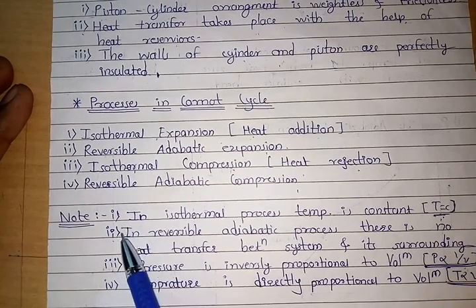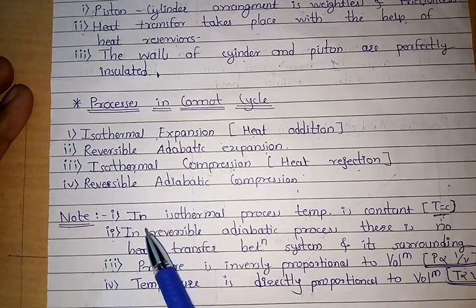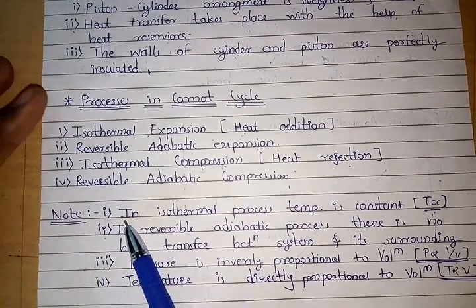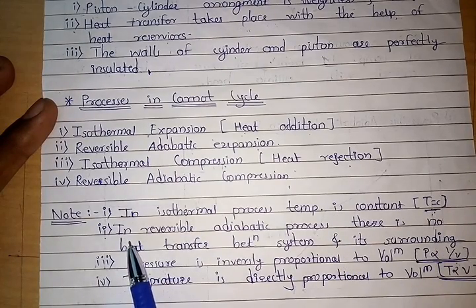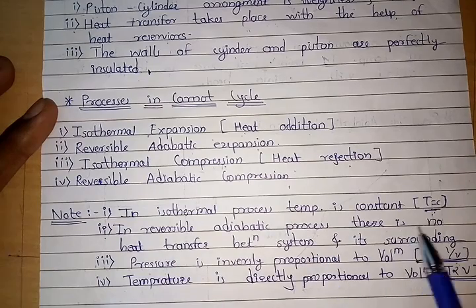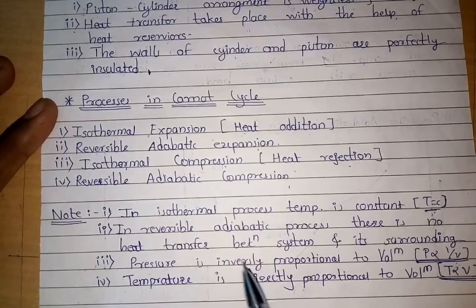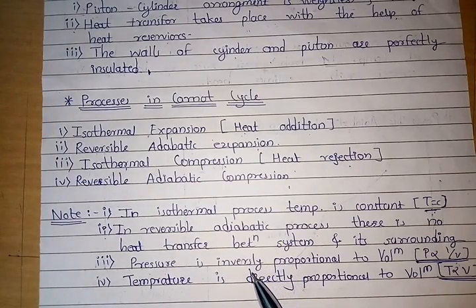Before studying the Carnot cycle, note down four points helpful for understanding it. First note: in an isothermal process, temperature is constant. Second note: in a reversible adiabatic process, there is no heat transfer between the system and its surroundings. When there is no heat transfer, the change in entropy is zero — the process is carried out at constant entropy.